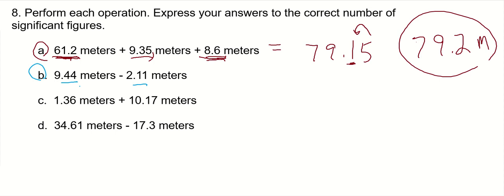So your answer also has... So 9.44 minus 2.11 is 7.33, and that's your final answer, 7.33 meters. You're adding or subtracting units, it's going to be the same unit.